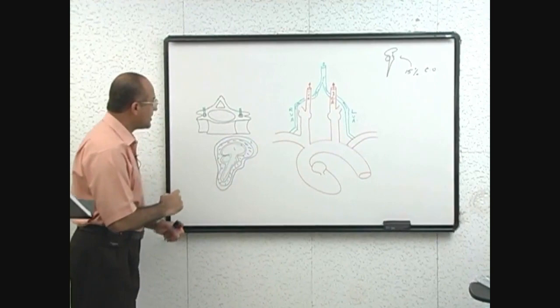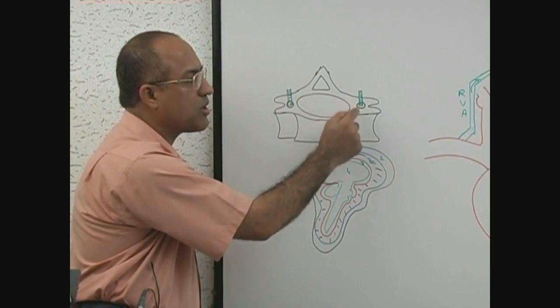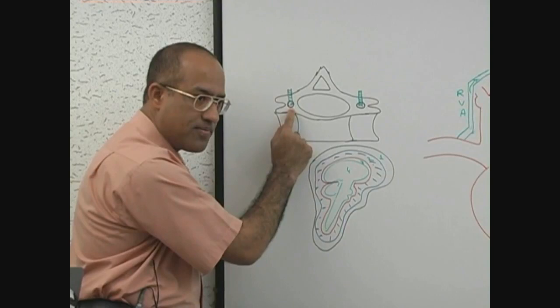I was telling you that vertebral arteries are going upward through the foramina present in transverse processes of cervical, not thoracic, cervical vertebrae.